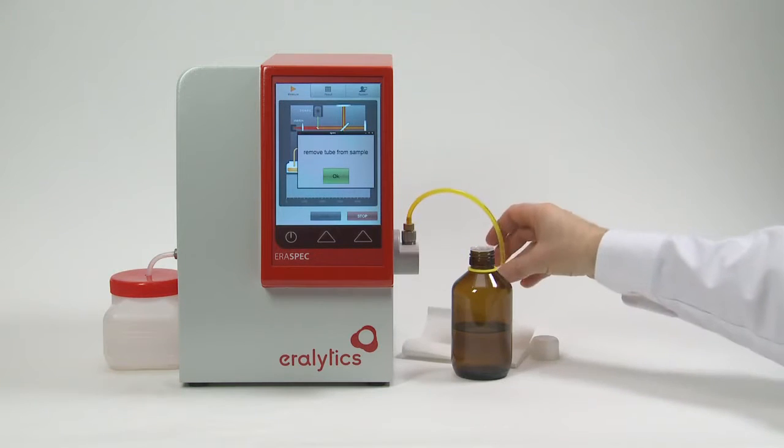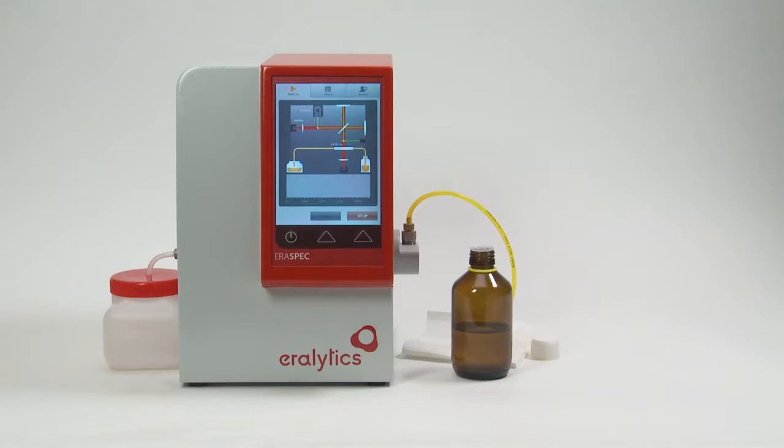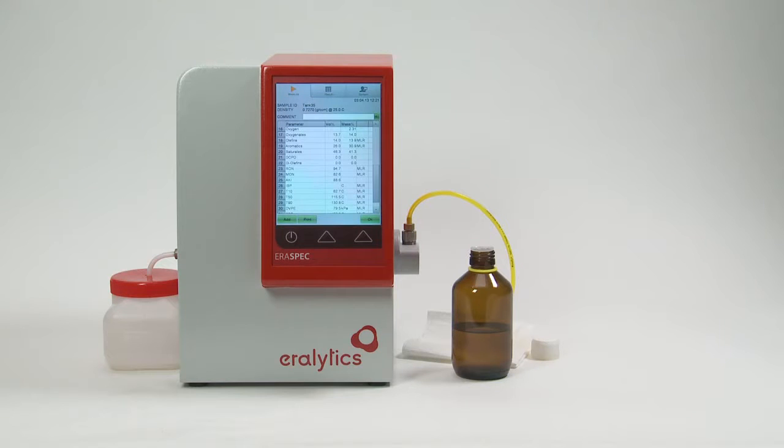When the system is completely filled with sample, please remove the inlet tube from the sample container and confirm this on the analyzer. Aerospec now measures the IR spectrum. At the end of the measurement, the sample is pumped out of the system and the result list is displayed. The total measurement time is about one minute.